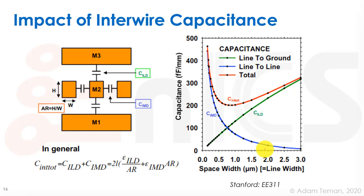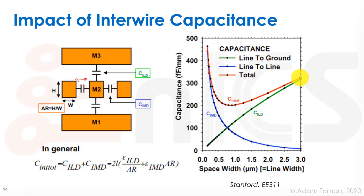In fact, the interwire capacitance has gotten much worse than the capacitance to ground. If we take a model with a metal layer, one above and one below, with adjacent metals at minimum spacing in the same layer, as we scale the width, the line-to-ground capacitance (green) has gotten small, while the line-to-line capacitance has grown. In the past with large spacings, the total capacitance was dominated by line to ground. Nowadays, the capacitance to ground is almost negligible compared to the capacitance to adjacent wires.